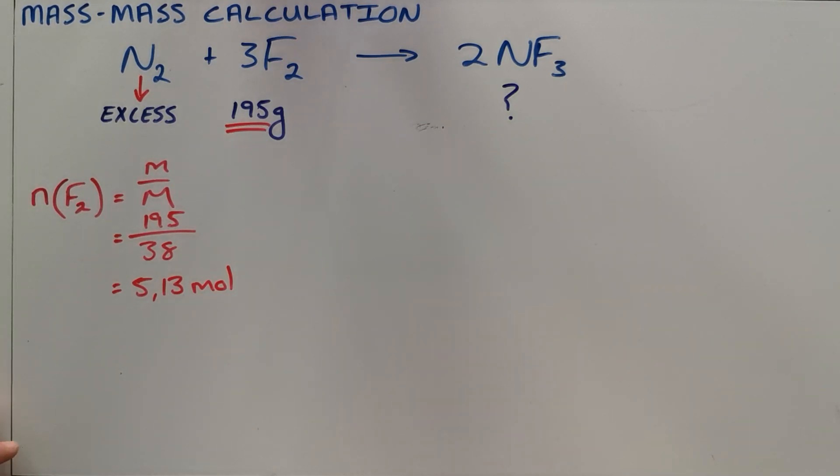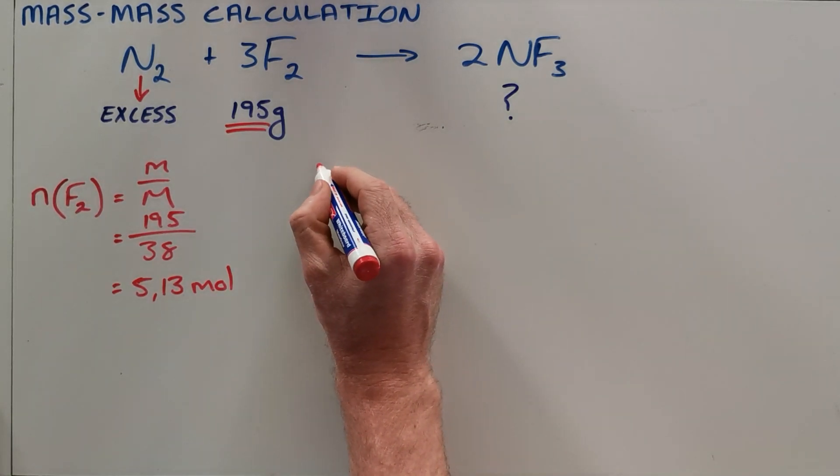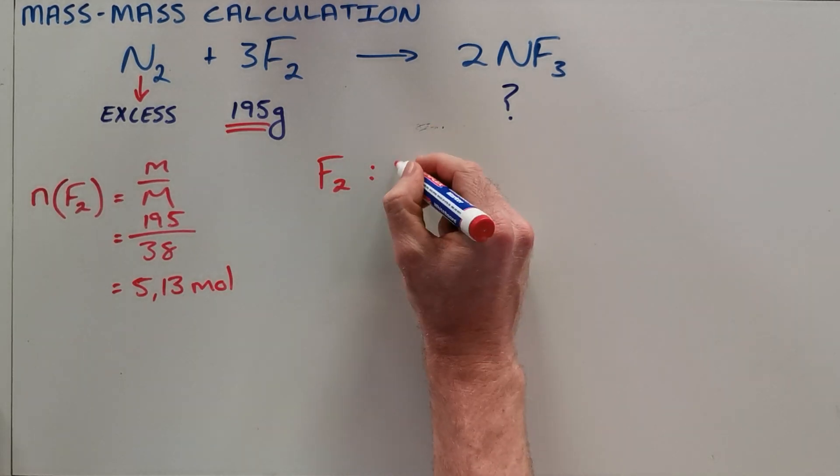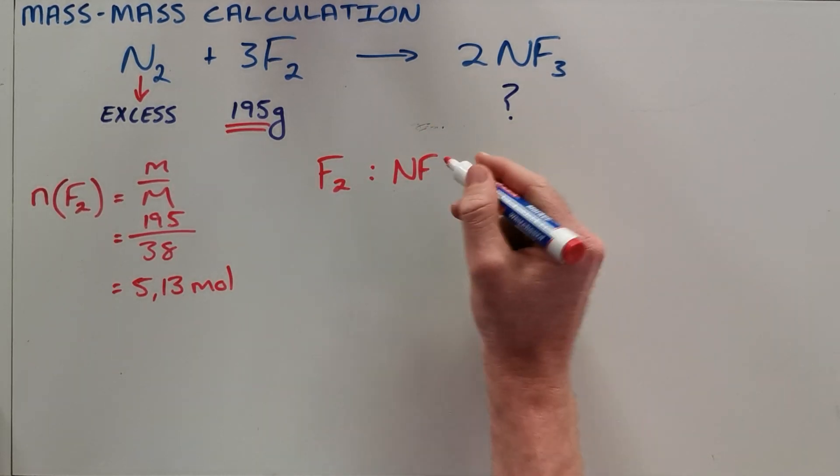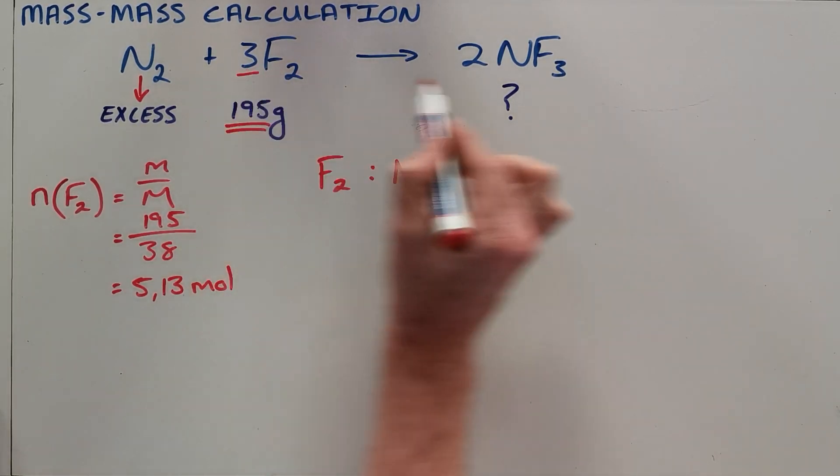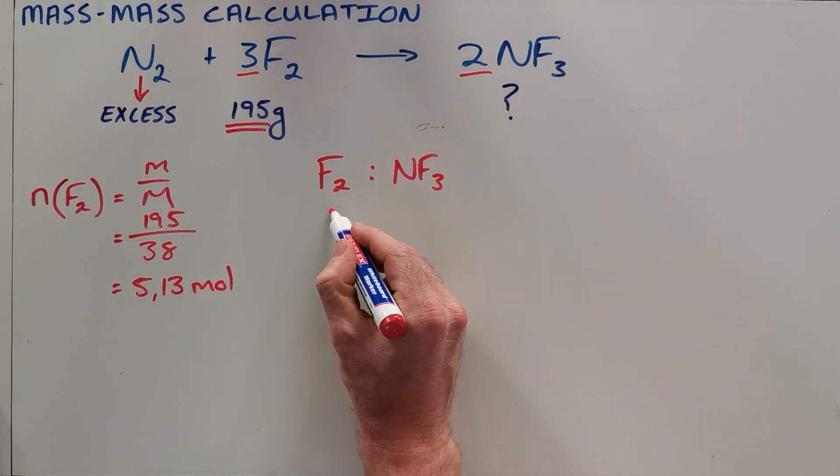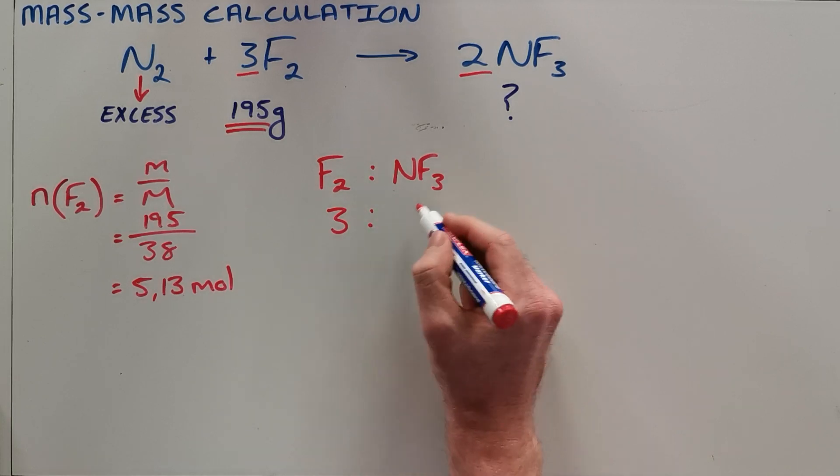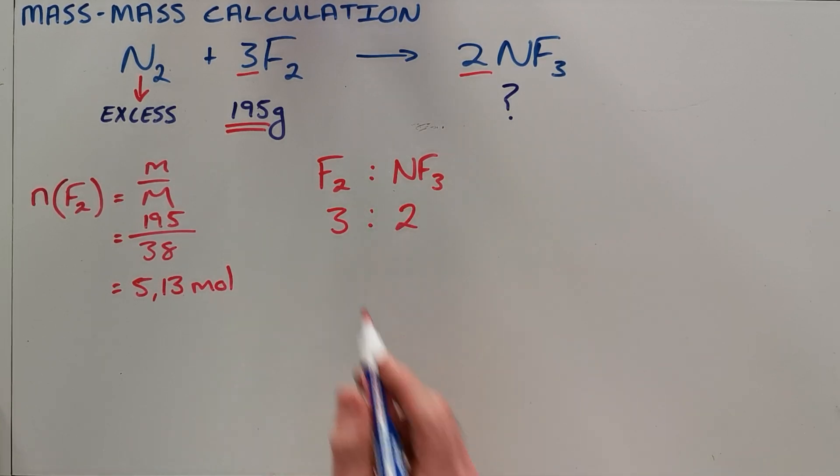Now once we've got this, we can compare fluorine to our product nitrogen trifluoride, and we take our balancing numbers or the coefficients to see that the ratio of fluorine to nitrogen trifluoride is a ratio of 3 to 2.